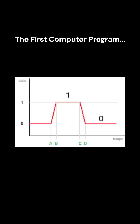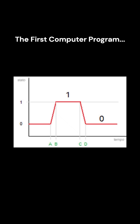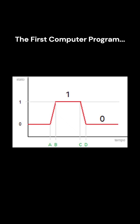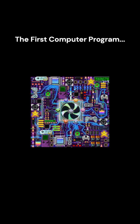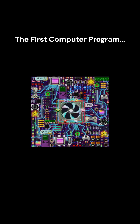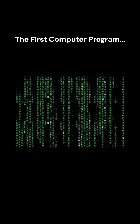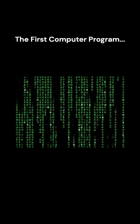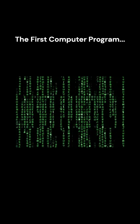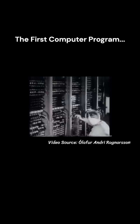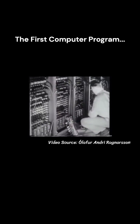A pulse represented one; no pulse represented zero. These pulses moved through circuits to add, subtract, and multiply numbers. This is what computers understand — only zeros and ones. In the early days, programming wasn't about typing code; it was physically wiring the machine.